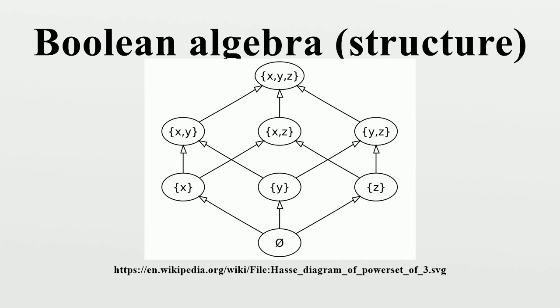The first four pairs of axioms constitute a definition of a bounded lattice. It follows from the first five pairs of axioms that any complement is unique. The set of axioms is self-dual in the sense that if one exchanges ∧ with ∨ and 0 with 1 in an axiom, the result is again an axiom.